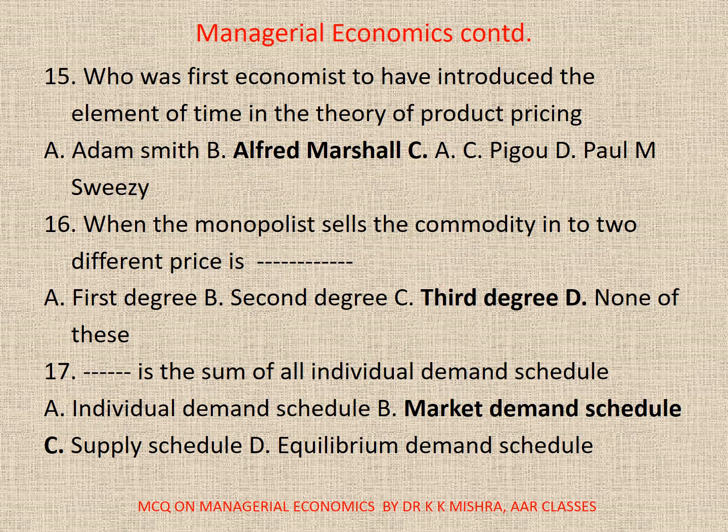15. Who was the first economist to have introduced the element of time in the theory of product pricing? A. Adam Smith, B. Alfred Marshall, C. A.C. Pigou, D. Paul M. Sweezy. Correct option is B. Alfred Marshall.